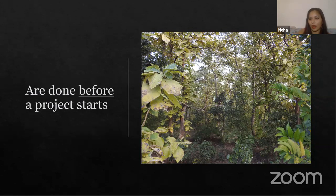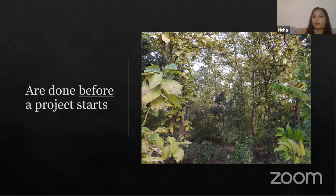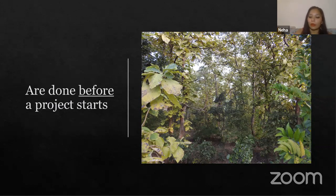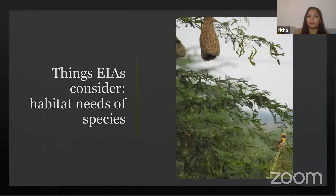An Environmental Impact Assessment always happens before a project starts — that is the entire logic of an EIA. I understand what I'm getting into: how much I have to build, how many trees I need to cut, how much water I need. Based on what the EIA says, the environmental clearance is then granted. That is the current legal process.